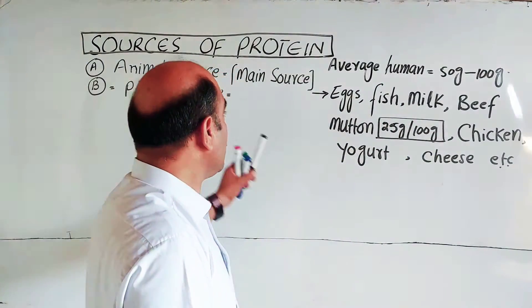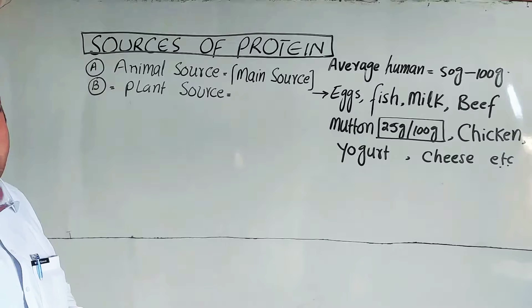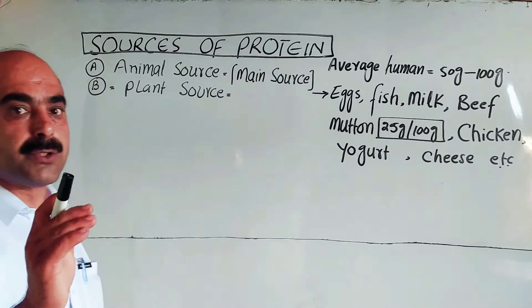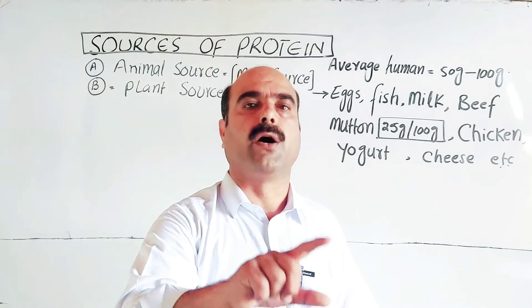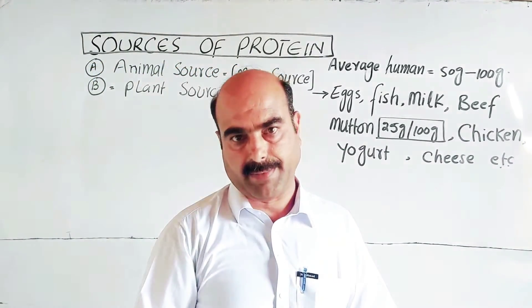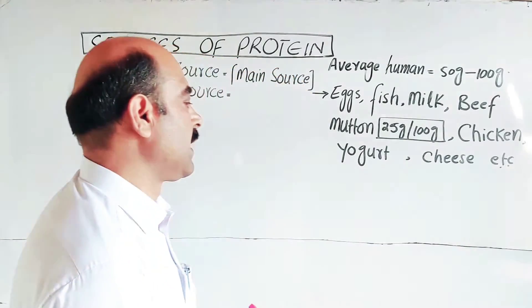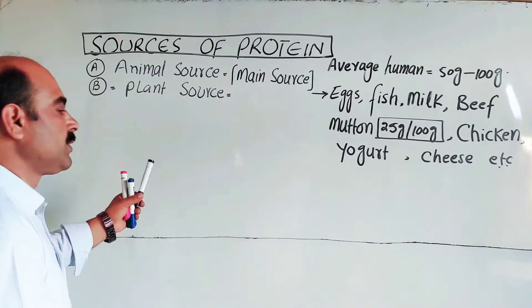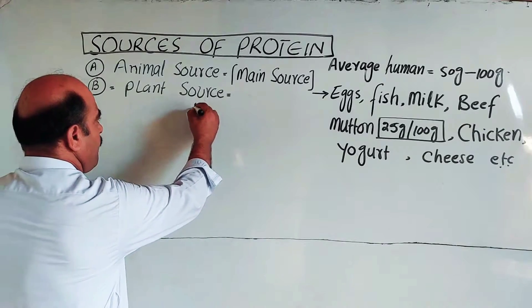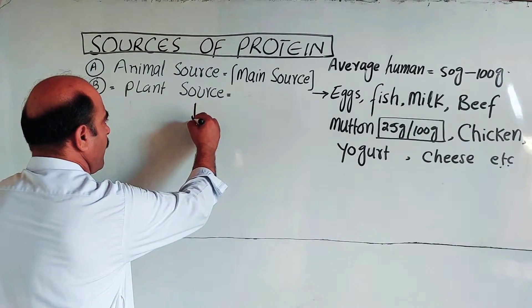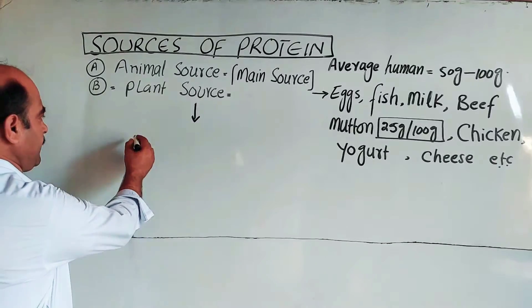Now the plant sources. Plant sources are of two types: fruits and vegetables. The main plant sources include the general parts of plants. Plants are generally sources of protein through pulses.